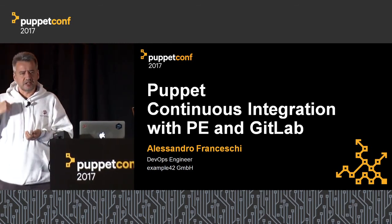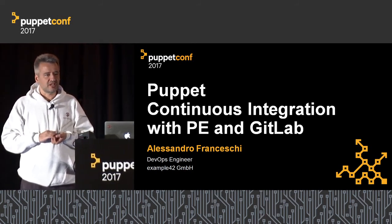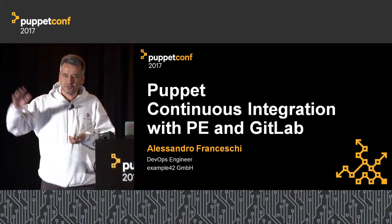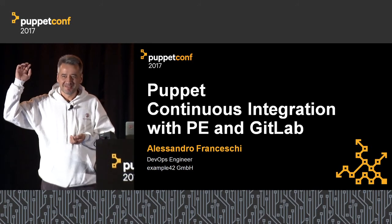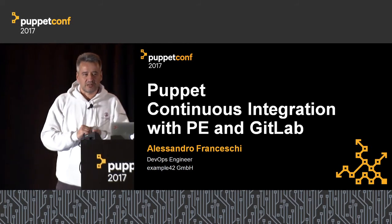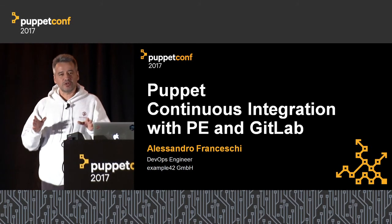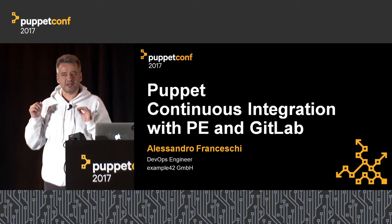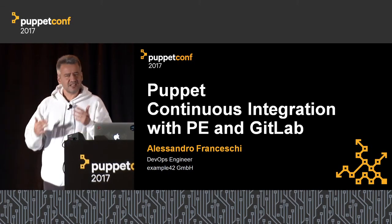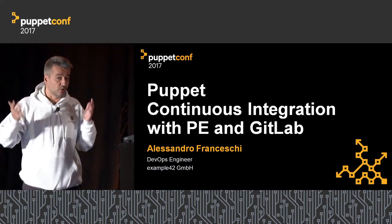Have you heard about Example 42 before? Do you use any of our modules? By old ones, I mean most of the modules we did in the past. The modules we check on the Forge since five, six years — I would recommend you not to use them anymore. They were done for Puppet 2 times. Now we are in Puppet 5. A lot of things have changed. They still work, they still run on Puppet 5, but they are based on very, very old assumptions.